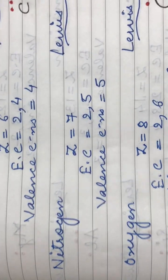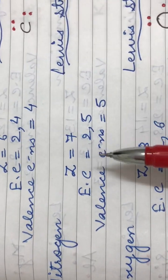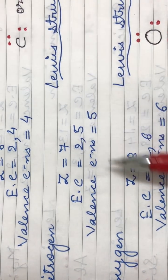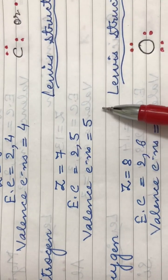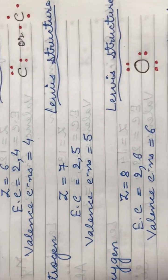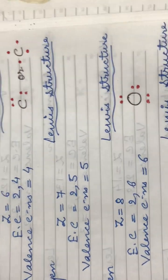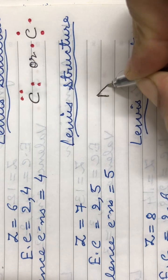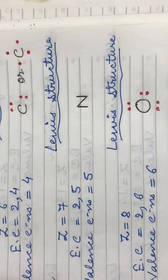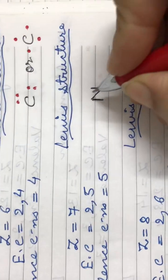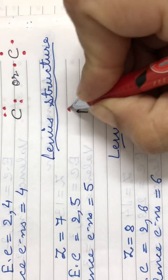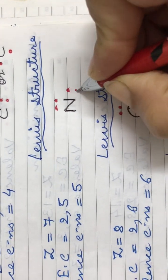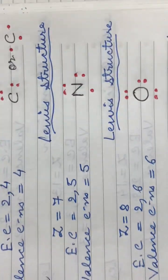Coming to the next element, nitrogen. It has an atomic number of seven. Its electronic configuration is 2,5 and it has five valence electrons. Therefore, the Lewis structure for nitrogen is the symbol N with five dots shown in pairs around it — four placed in pairs and the fifth electron on the remaining side.